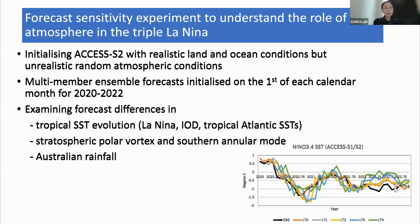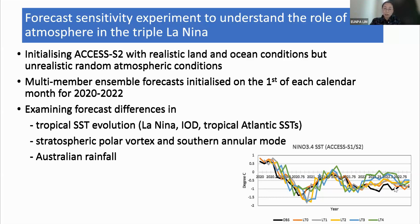Once the data are available, we will look at tropical SST evolution regarding La Niña, negative IOD, and tropical Atlantic SST conditions. We will also look at the stratospheric polar vortex and Southern Annular Mode — how much of this atmospheric large-scale circulation is driven by La Niña conditions — and, of course, Australian rainfall. When the data are available, we'd like to make a call so the community, even outside our working group, can look at the data and see the sensitivity of the atmosphere over the last three years.